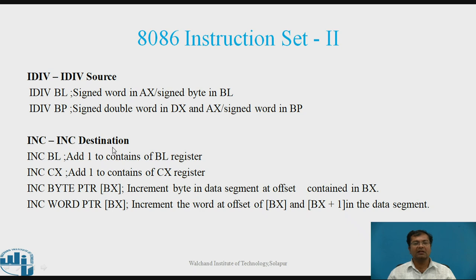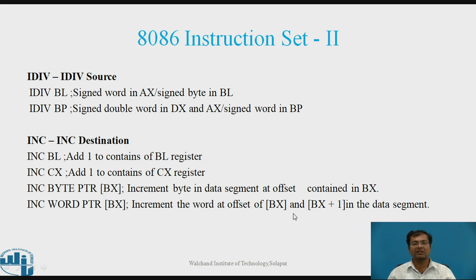INC — Increment Destination. Example: INC BL — adds 1 to contents of BL register. INC CX — adds 1 to contents of CX register. INC BYTE PTR [BX] — increments the byte in the data segment at the offset contained in BX. INC WORD PTR [BX] — increments a word at offset BX and BX+1 in the data segment.